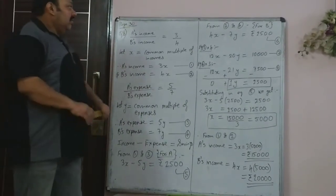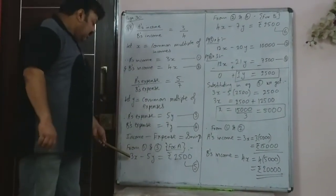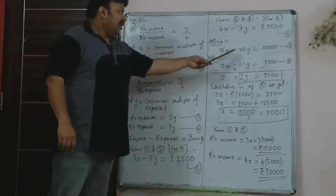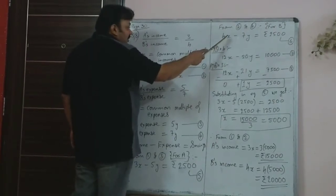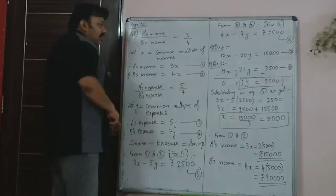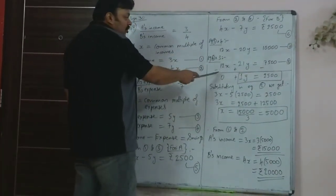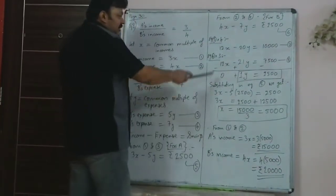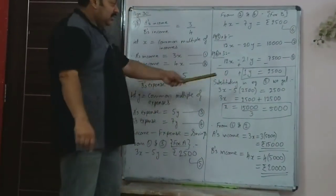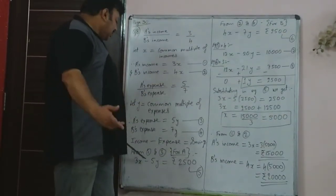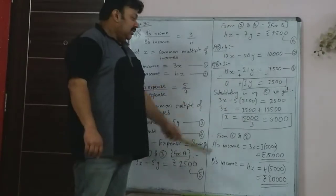We now have two simultaneous equations (5 and 6). Using the method of eliminating coefficients, making the x coefficient 12: multiplying equation 5 by 4 gives 12x minus 20y equals 10000. Multiplying equation 6 by 3 gives 12x minus 21y equals 7500. Subtracting equation 8 from equation 7, all signs change: 0 plus 1y equals 2500, so y equals 2500. Substituting back into equation 5 gives x equals 5000.